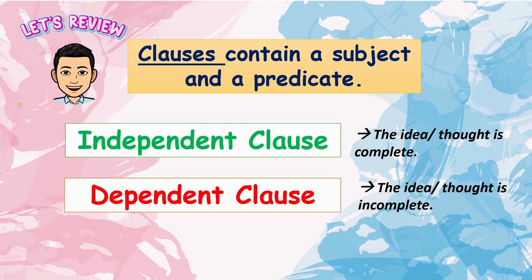Before we study compound and complex sentences, let us review first our lesson on clauses. A clause contains a subject and a verb. It can be an independent clause or a dependent clause. An independent clause can stand by itself as a complete sentence that expresses a complete thought. A dependent clause, on the other hand, is not a complete sentence and cannot stand by itself. To express a complete thought, a dependent clause must be attached to an independent clause.